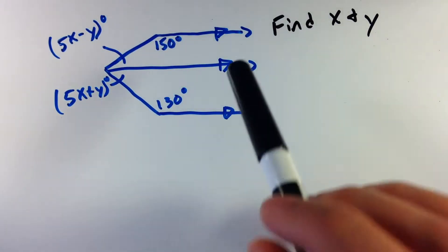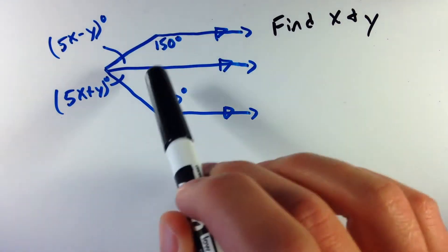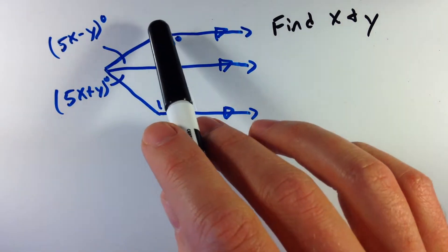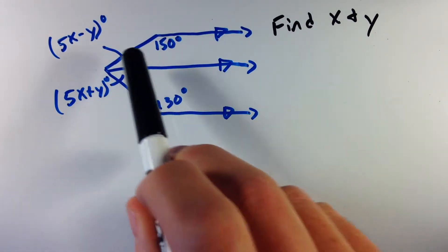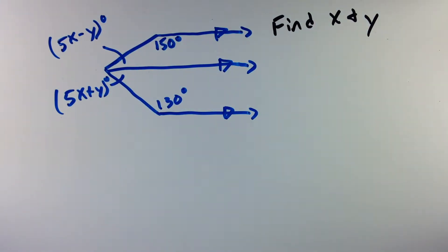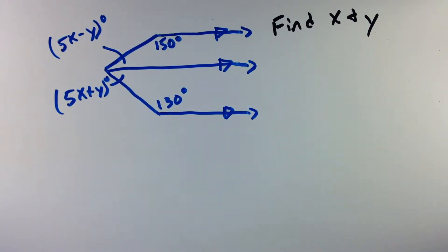One, since all three of these lines are parallel, these two angles in between the two parallel lines cut by a transversal are supplementary. They're consecutive interior angles. Same thing with these two. So these two angles here are supplementary, these two angles are supplementary, and we'll use that information to solve what we need to get, the x and y.